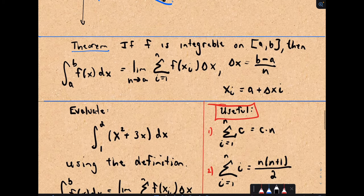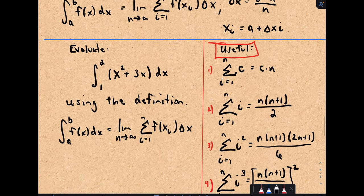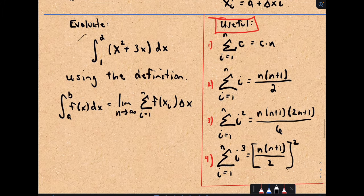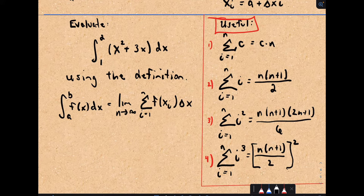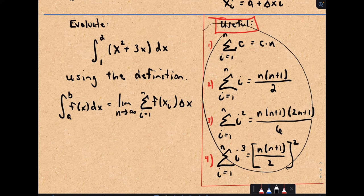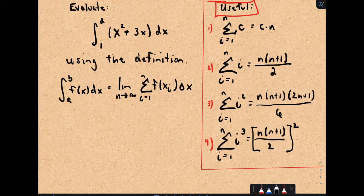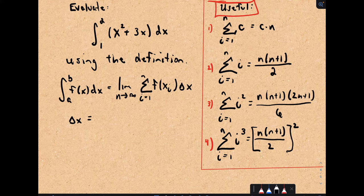So let's talk about actually computing a definite integral using the definition. We want to compute the definite integral from 1 to 2 of x squared plus 3x dx. These can be tedious and a little bit long. I've got these formulas on the right side that we're going to need. If you've got a quiz or a test, ask your instructor whether you need them memorized. So we've got to fill in a couple things: a value for delta x and a value for x sub i. Delta x is going to be the length of the interval — b minus a divided by n — so that's 1 over n.